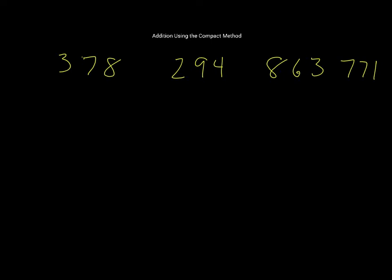Okay, in this video I'm going to cover addition using the compact method. I've got four numbers here: 378, 294, 863, and 771. I'm just going to pick two of these numbers at random and do an addition and a subtraction using the compact method.